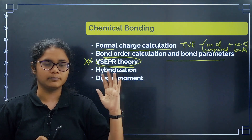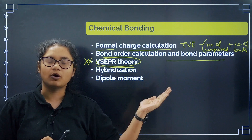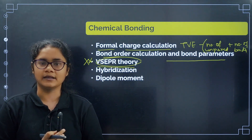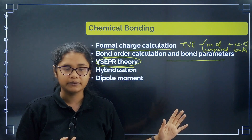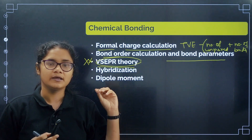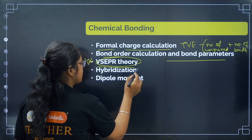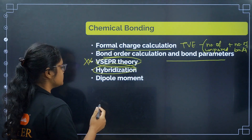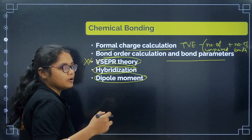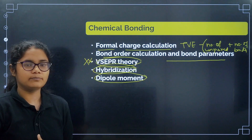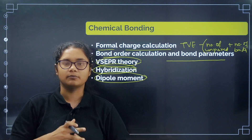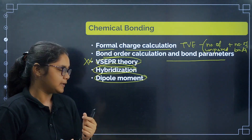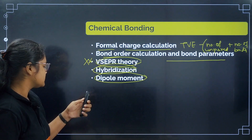VSEPR theory is very very important — the most important topic here. Learn all examples of hybridization for all electron pair combinations: for six electron pairs, four bond pairs, two lone pairs — know the shape, geometry, and examples. This will definitely be a question, so prepare it thoroughly. Also cover hybridization sp³, sp², sp; shapes; geometry; dipole moment — which molecules have net dipole moment and which do not, and how they cancel each other.